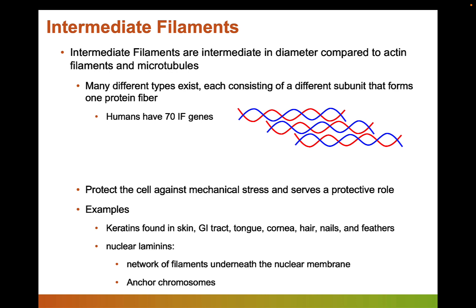Some examples of intermediate filaments are keratin proteins, found in the skin, GI tract, tongue, cornea, hair, nails, and feathers, providing structural support to those tissues. Another really important intermediate filament is nuclear lamins. Recall that the nucleus has a double membrane — the nuclear envelope. Under that nuclear envelope is a network of nuclear lamin filaments that help the nucleus maintain its shape. Chromosomes also bind to these intermediate filaments, anchoring them, and they can detach during DNA replication or cell division.